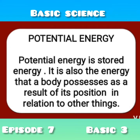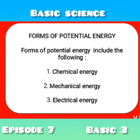Under potential energy, we have other forms of energy. We have chemical energy, which is stored in the food we eat and the fuel we burn. Second, mechanical energy, which is stored in a mechanical object by tension. Third, electrical energy, which is stored in a battery. Electrical appliances convert electrical energy into forms of kinetic energy.